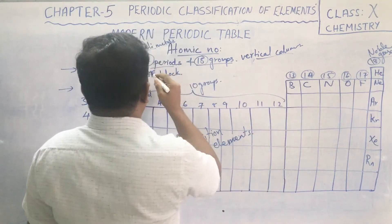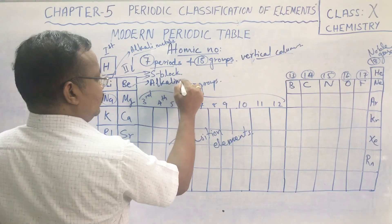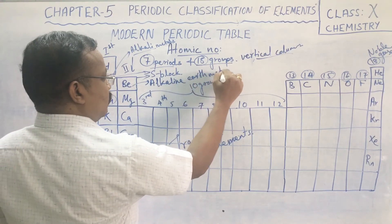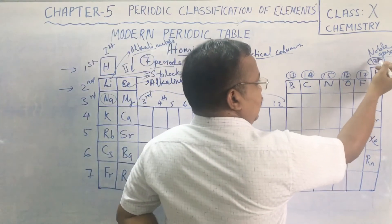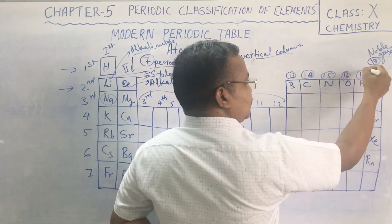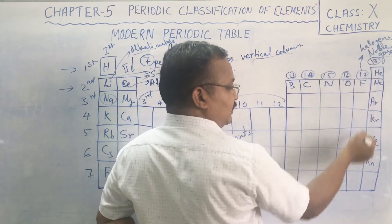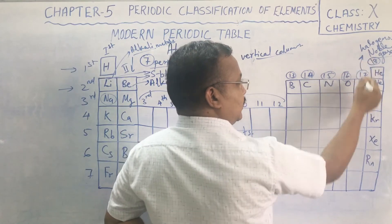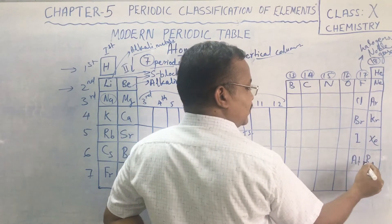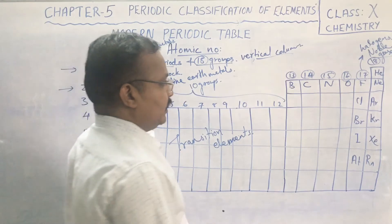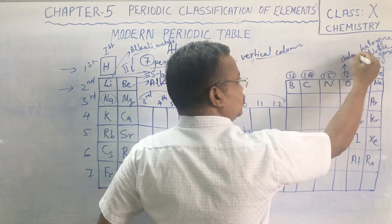After alkali metals, the second group is our alkaline earth metals. They are found in the earth's crust, which is why they are called alkaline earth metals. The 17th group elements are called halogens: fluorine, chlorine, bromine, iodine, and astatine.